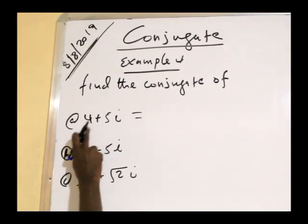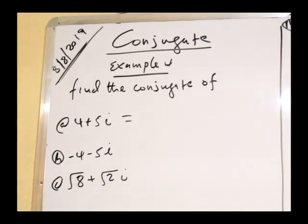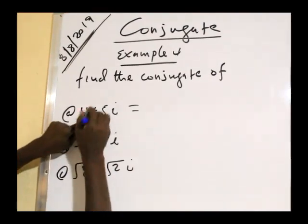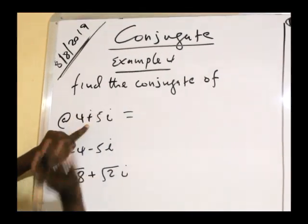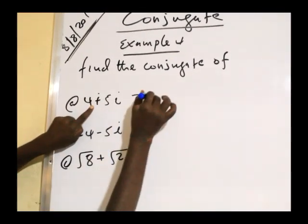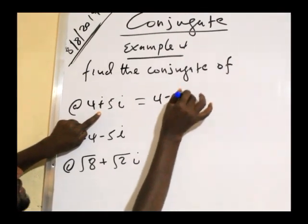The first thing that I have to do is find the conjugate of 4 minus 5i. That's the conjugate of 4 minus 5i. We're going to say 4 minus 5i.